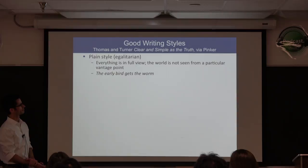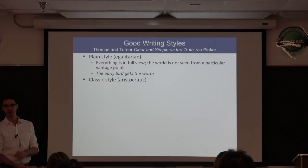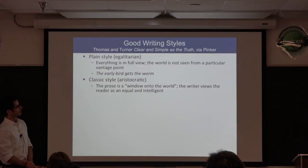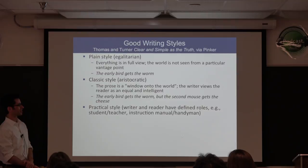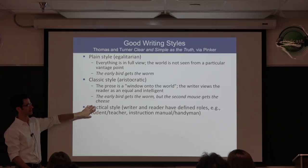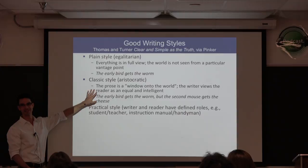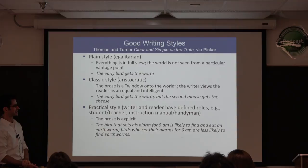There's a classic style, which is a little more aristocratic and assumes more depth on the part of the reader. Example: 'The early bird gets the worm, but the second mouse gets the cheese.' Then there's a practical style, which is most of the time what scientific writing uses. The prose is explicit: 'The bird that sets his alarm for 5am is likely to find and eat the earthworms. Birds who set their alarms for 6am are less likely to find earthworms.' — assuming birds can set alarms.